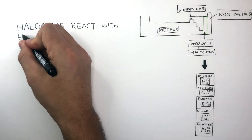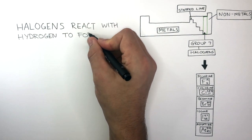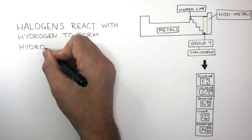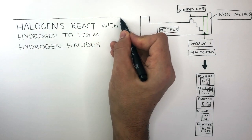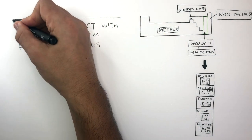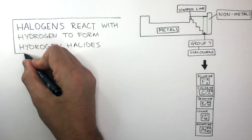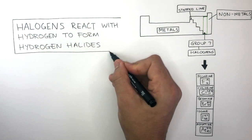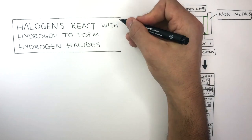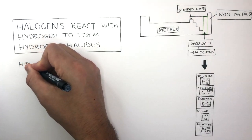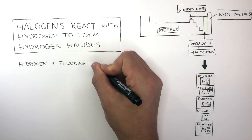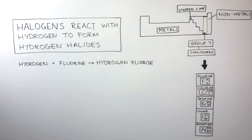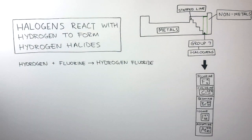Halogens react with hydrogen to form hydrogen halides. The word halide means a halogen has reacted with something — it could be an ionic bond or a covalent bond. So hydrogen reacts with fluorine to form hydrogen fluoride, and both the reactants and products are gases.